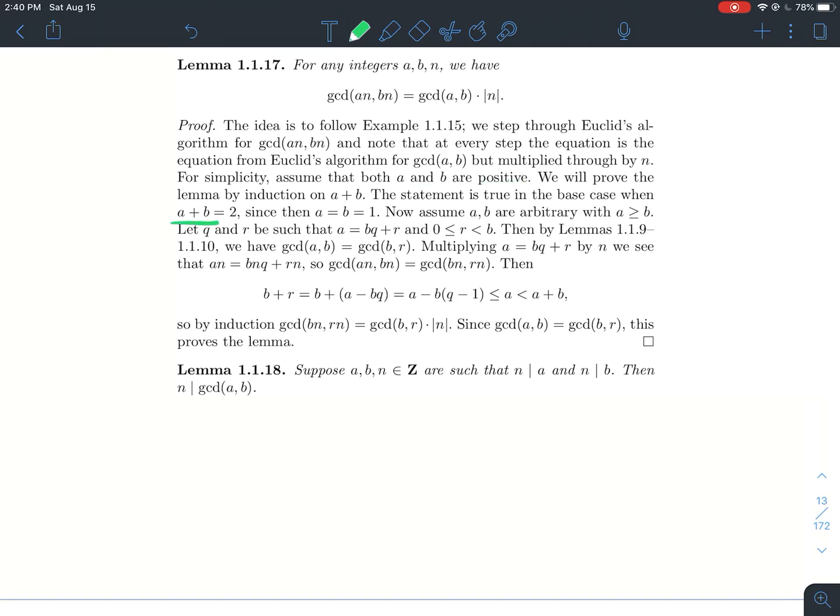The base case: if a plus b is equal to two, well that means that a and b have to both be one. These are integers and they've got to be positive.